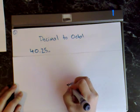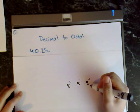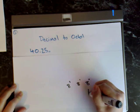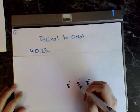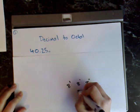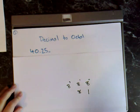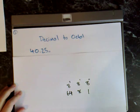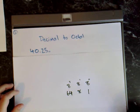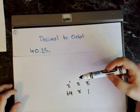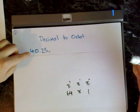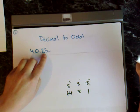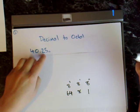8 to the power of 0 equals 1, 8 to the power of 1 equals 8, and 8 to the power of 2 equals 64. For now we're just going to work with the whole part of the number and then we'll do the fractional part later, because you have to do that a little bit differently.